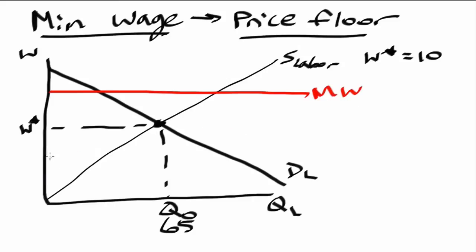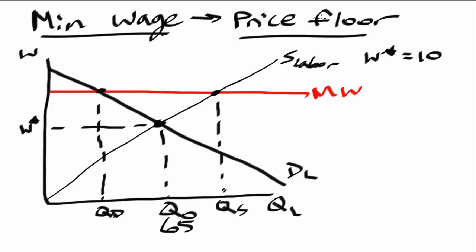Now what we can do is look at where our minimum wage intersects our overall demand for labor as well as our supply for labor. The intersection of the demand for labor with the minimum wage occurs at this point, and the intersection of the supply of labor with the minimum wage occurs at this point. This is what our quantity demanded is, and this is what our quantity supplied is. This minimum wage is an effective price floor because there are more people willing to work at this minimum wage than there are in terms of the amount of work that employers need — quantity supplied is greater than quantity demanded.